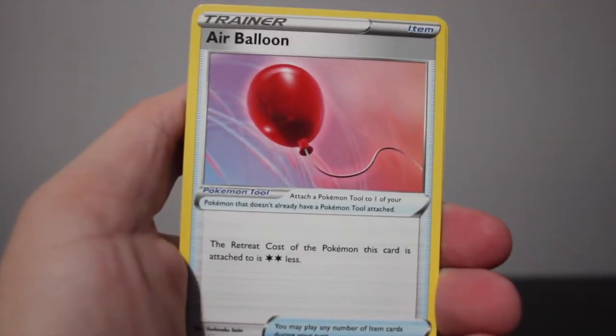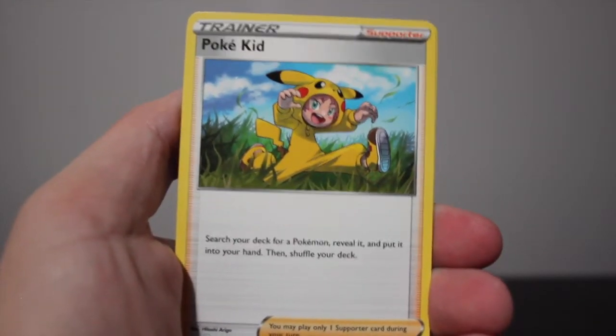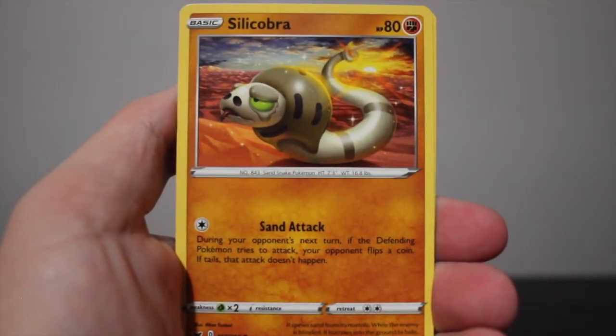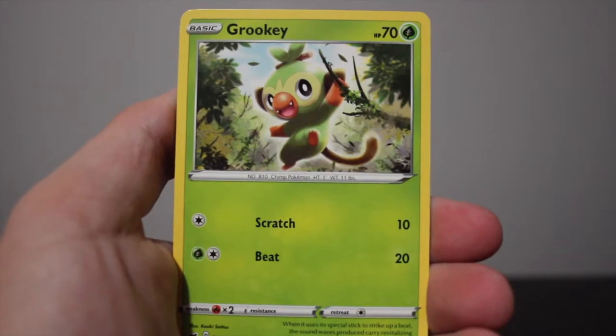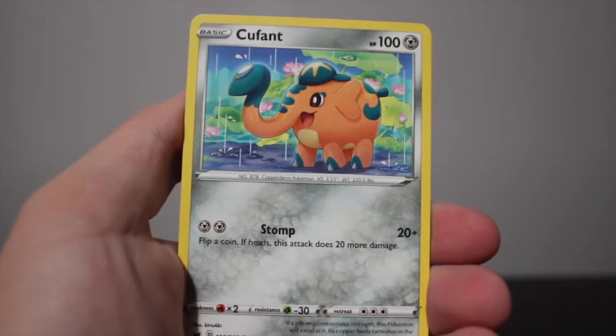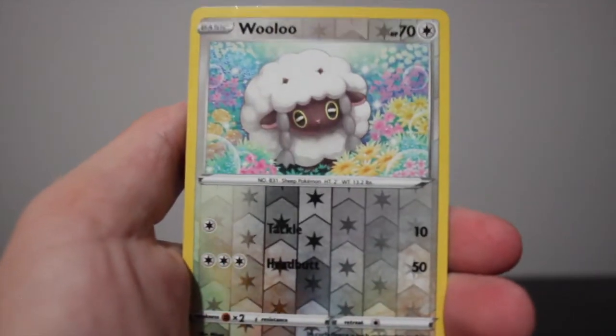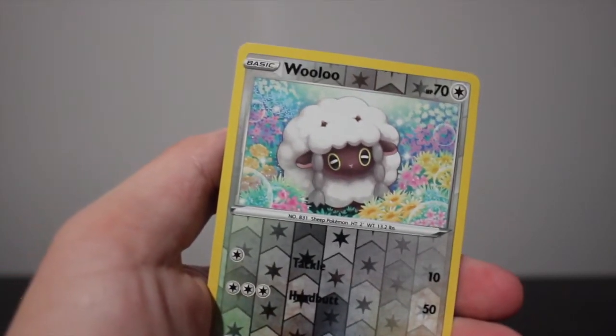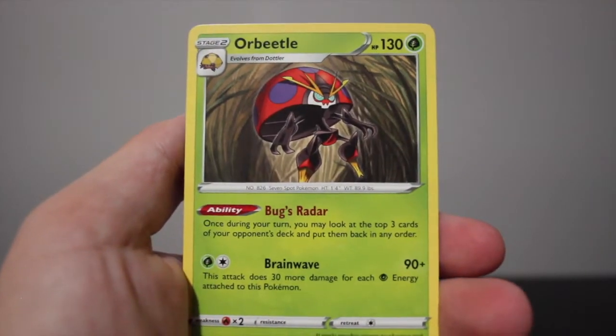Okay, a Galvantula, Air Balloon, Poke Kid, Silicobra, Camper, Grookey, Grapploct, Boldore, a very adorable Wooloo, and our rare. So that's how it's gonna be.